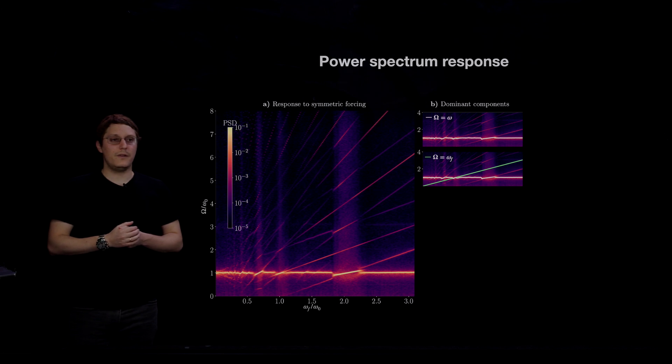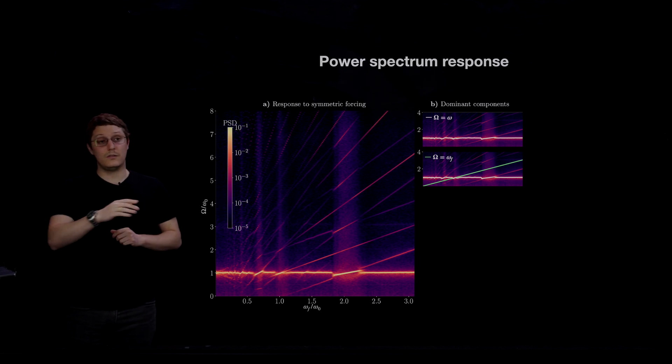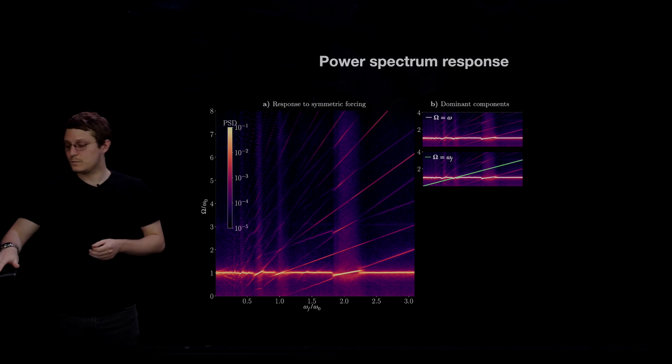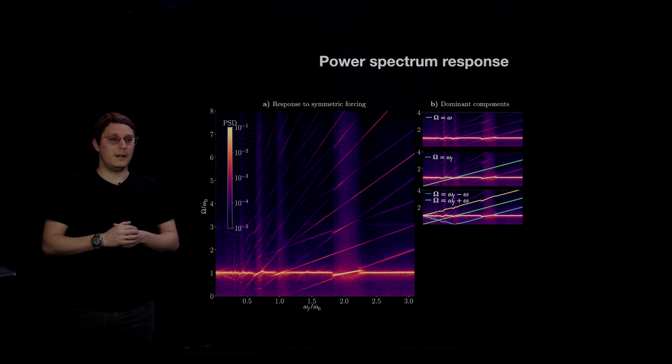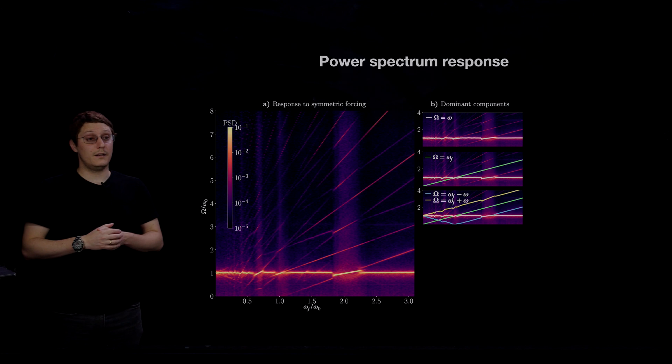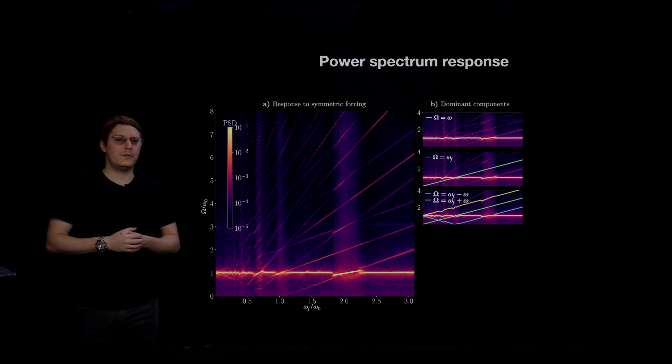And we also find the direct signature of the forcing frequency in the spectrum of the response. And that's colored by this green line, where capital omega equals omega f. And then we find these other regions that we color in yellow and in light blue, which correspond to non-linear interactions between the forcing and wake modes, giving rise to these signatures at omega f plus or minus omega zero.